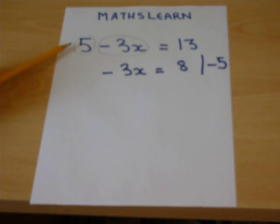The 5 and the minus 5 have cancelled out. 13 take away 5 is 8.